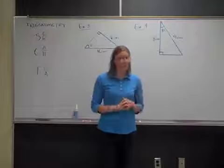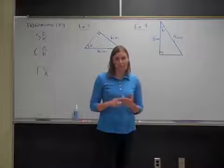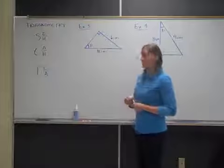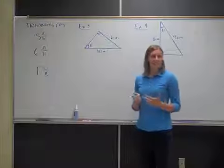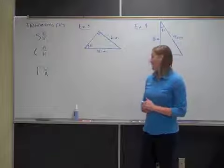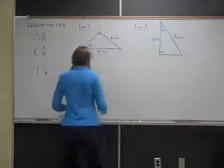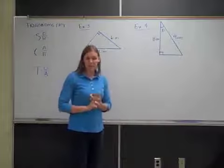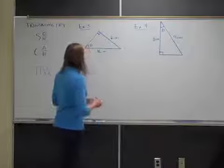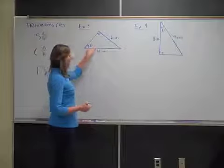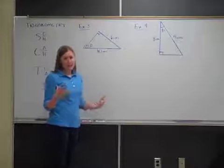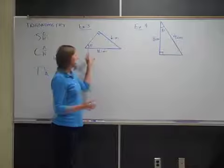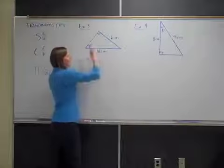In the problems so far I've given you one angle and one side. But what happens if you're given two sides and you're trying to find the angle instead? The nice thing is trigonometry can still be used to find that missing information. In example three, let's start the same way — label the information we have and identify what we're trying to find. This time theta is left as a variable since we don't know the angle, but we can still label the sides relative to theta.